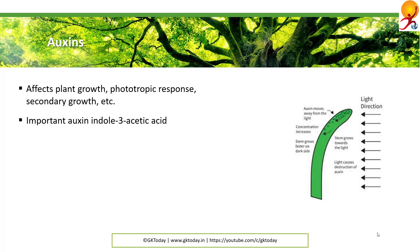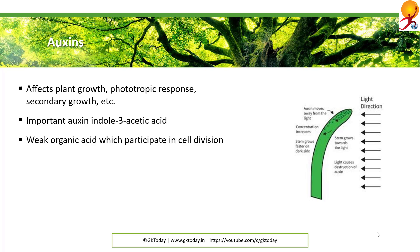An important plant auxin is indoleacetic acid or IAA, and there also exist synthetic auxins such as 2,4-D and 2,4,5-T, which are also commonly called weed killers. This hormone consists of weak organic acids which actively participate in cell division and cell elongation, thus promoting plant growth.